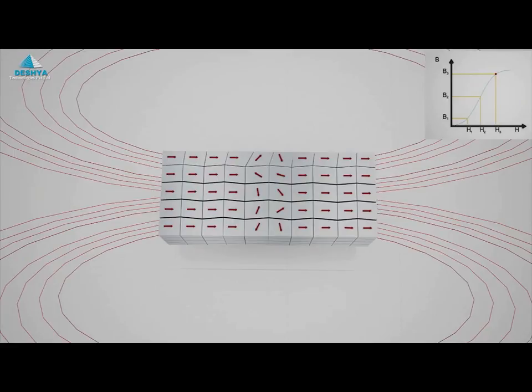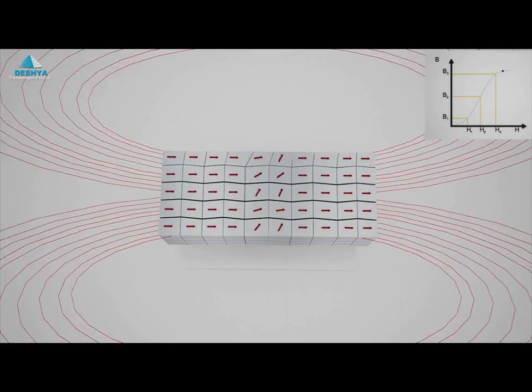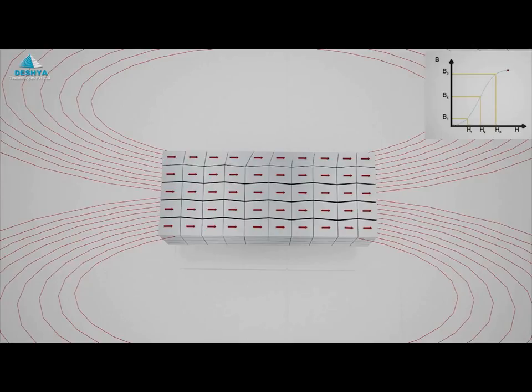Saturation occurs when practically all the domains are lined up, so further increase in magnetic field intensity cannot cause further alignment of the domains.